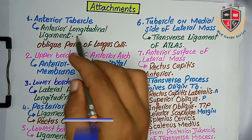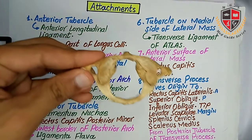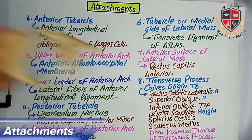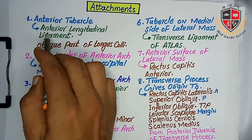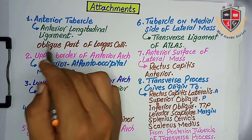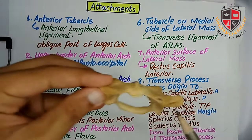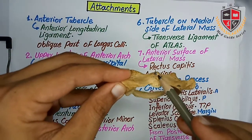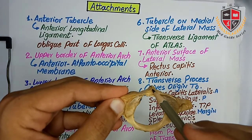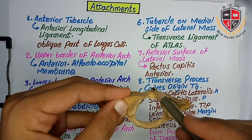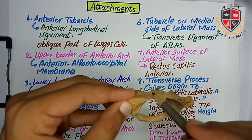The attachments of the atlas vertebra. The anterior tubercle provides attachment to the anterior longitudinal ligament and oblique part of the longus colli muscle on each side.